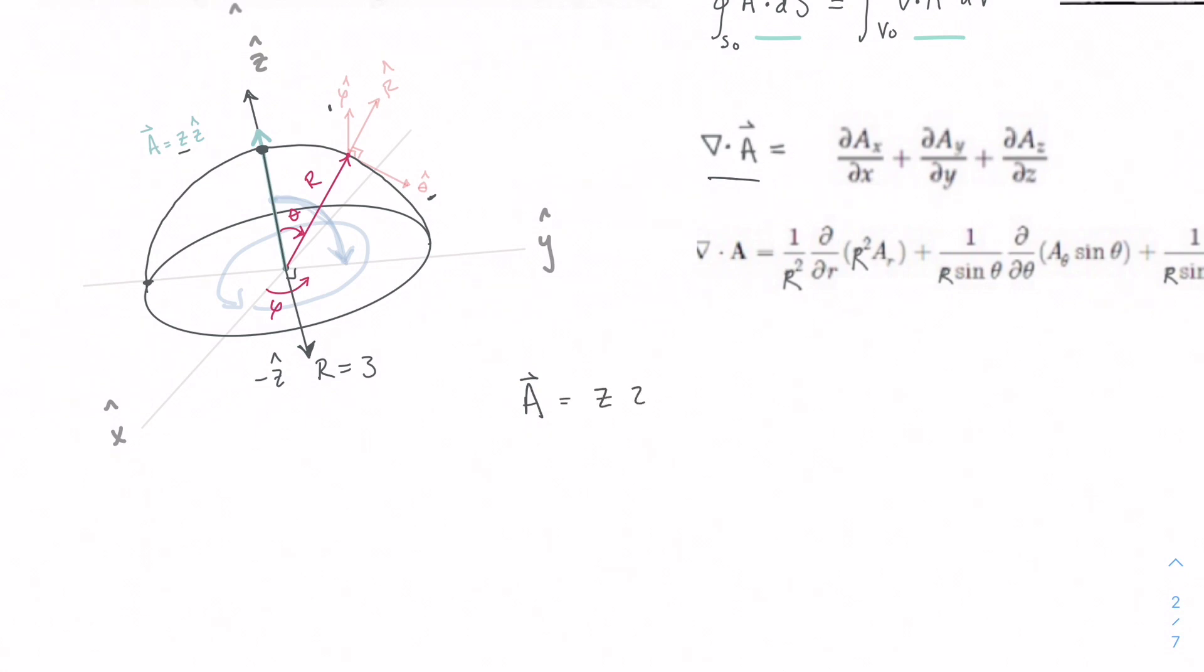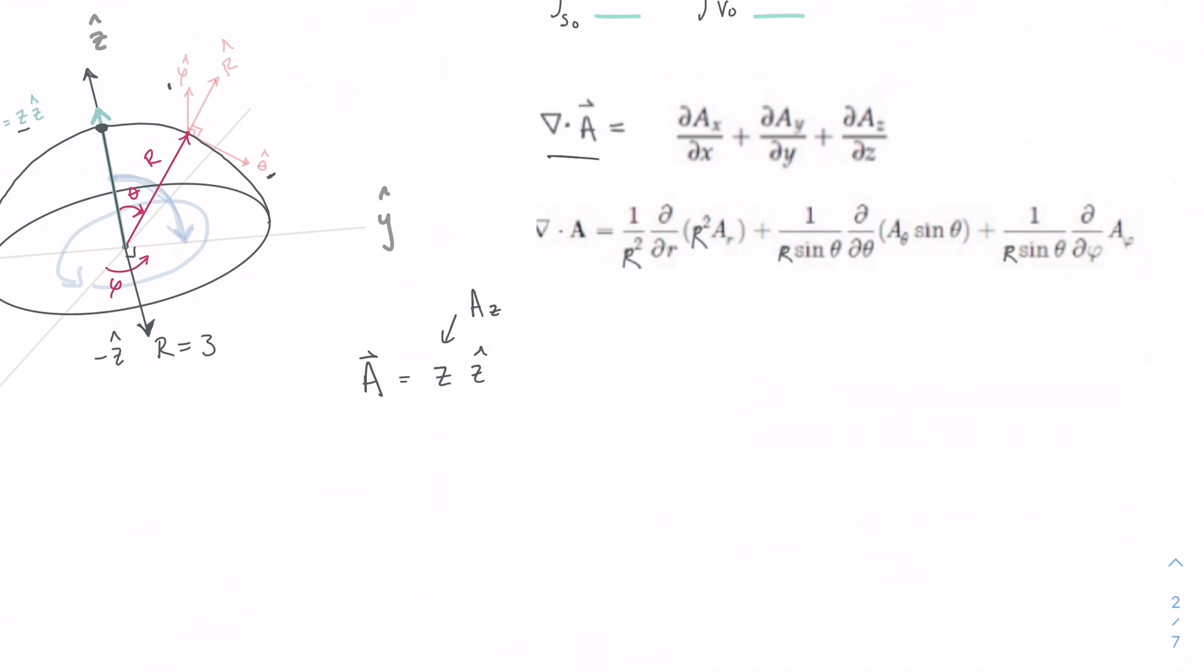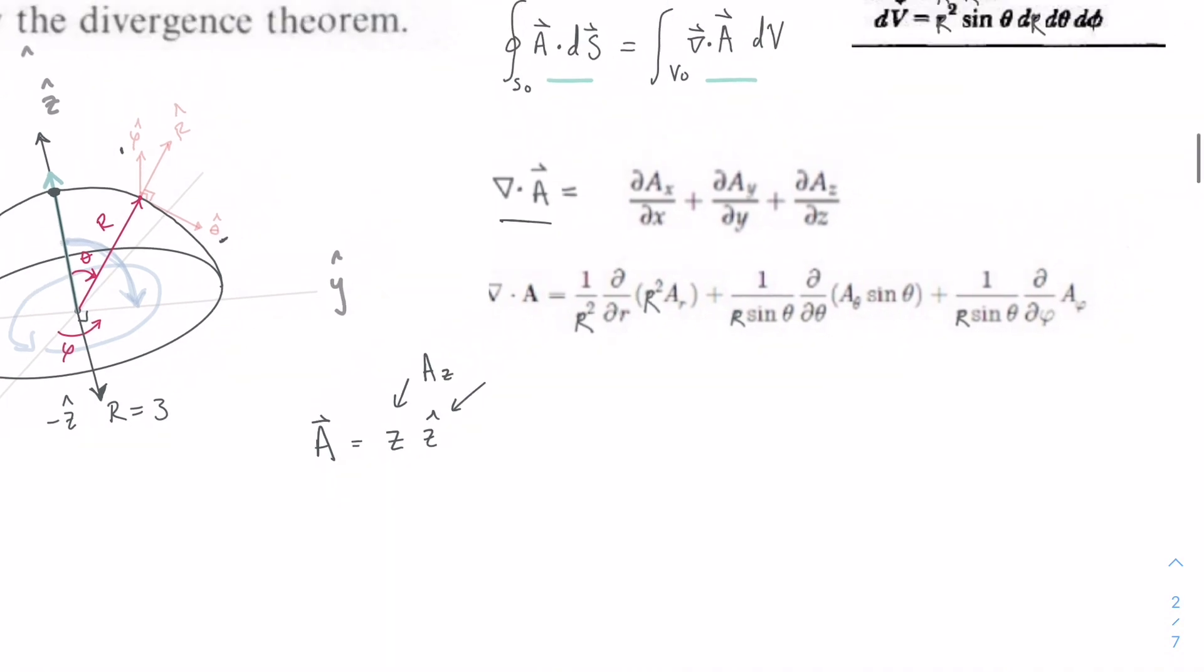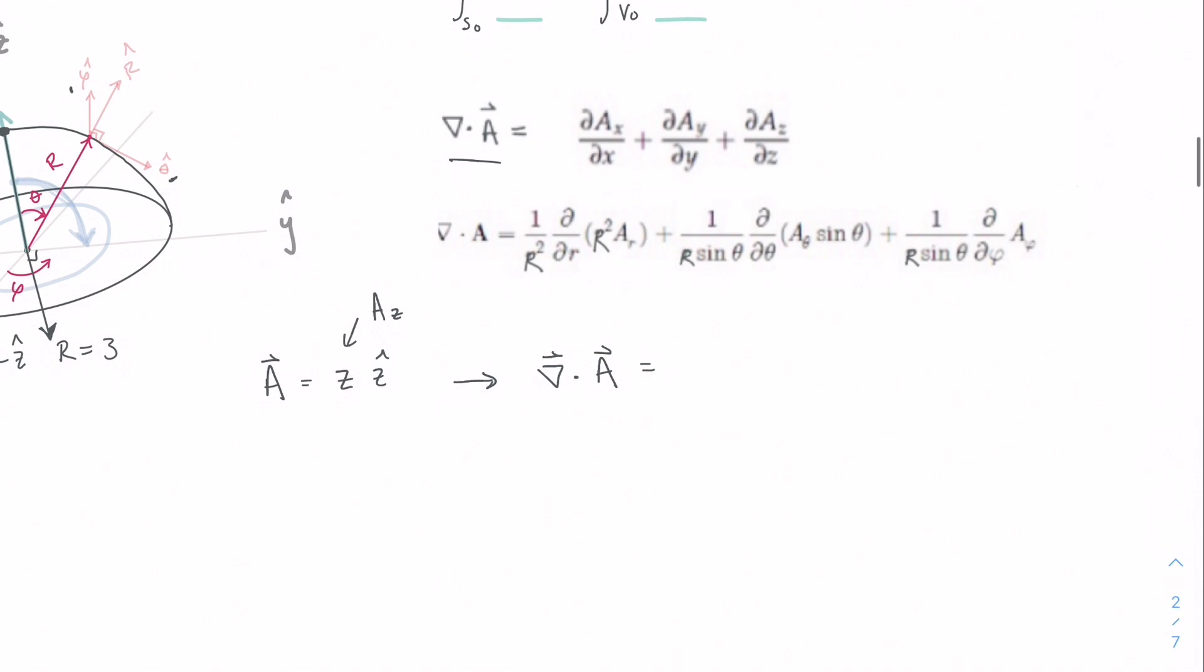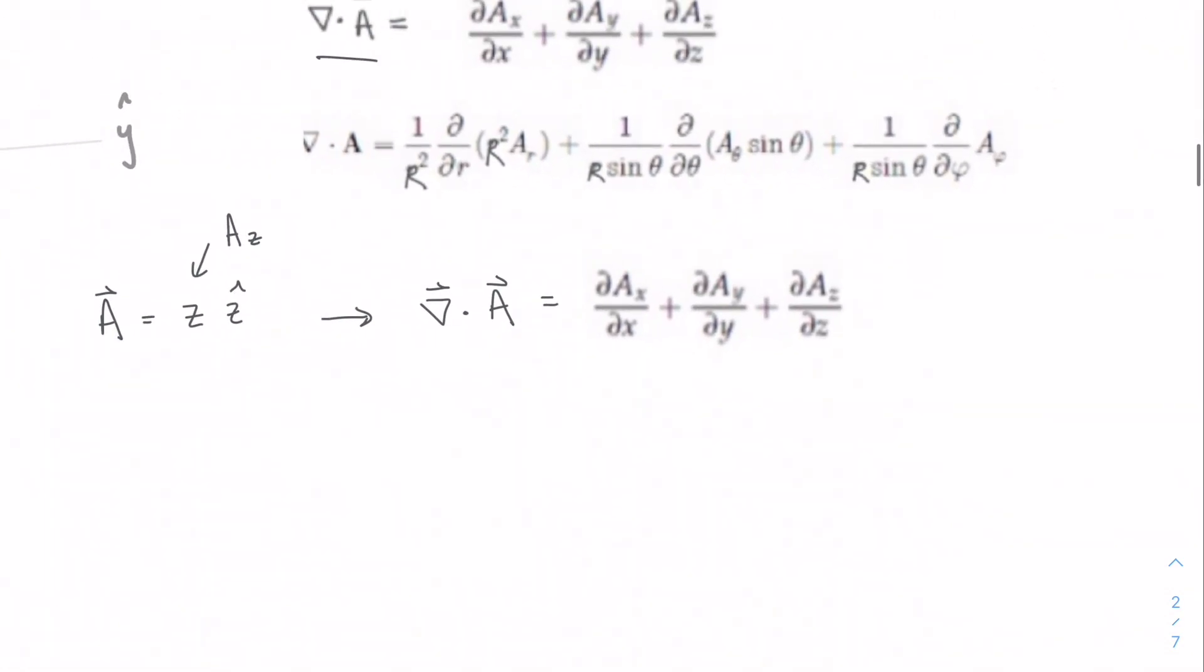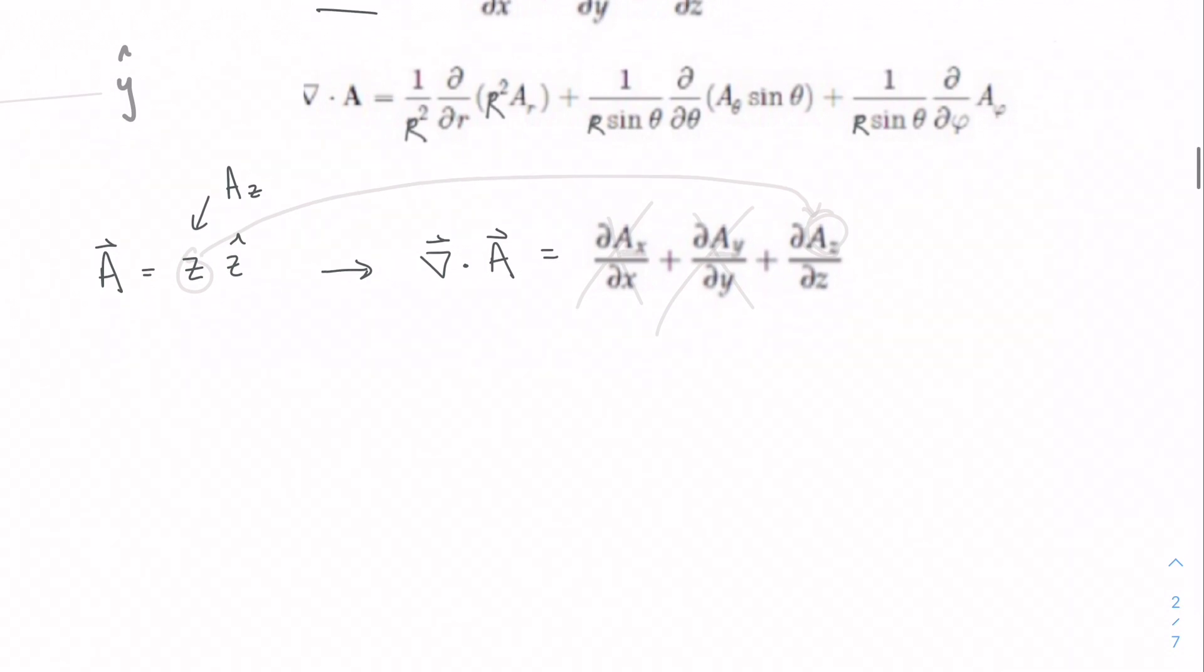Our vector in its original form is z z hat, so we have our magnitude. This would be the az magnitude, and then the direction in the z hat direction. So we could just take this magnitude and put it into our del operator here. We're going to sub in this z into this equation right here, and we're going to cancel out these terms because we don't have an ax or an ay, so it's zero. So we're just going to have the partial derivative with respect to z. Plugging in our az, and that's just z. So our answer is going to be 1.